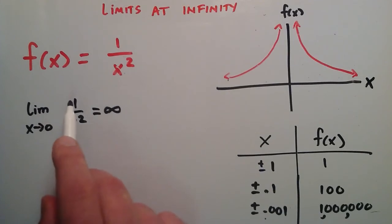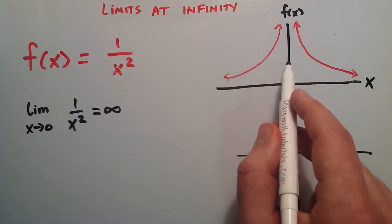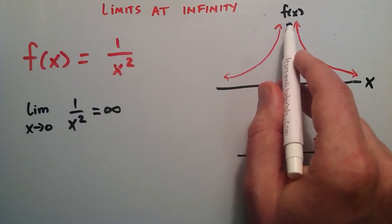If we take the limit of our function 1/x², the closer we get x to the value 0, the bigger the f(x) value we're going to get. We're not actually looking at f(0), because that point doesn't really exist.